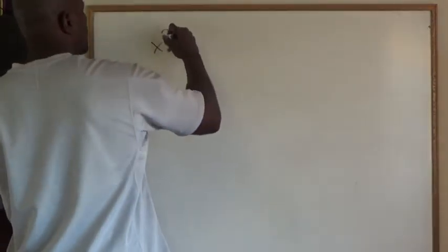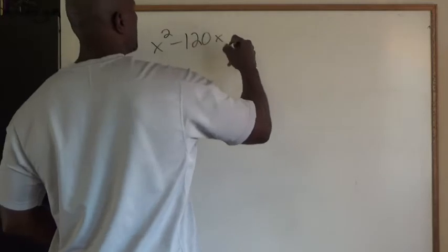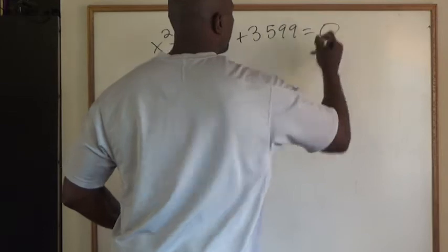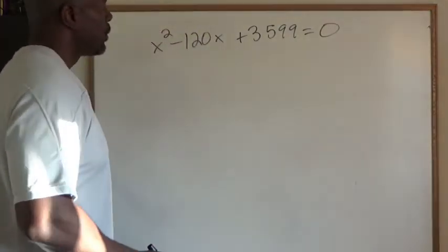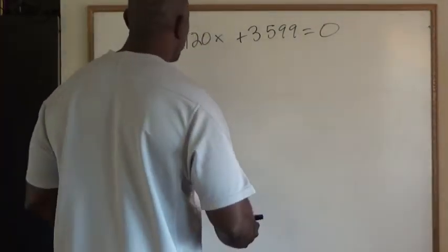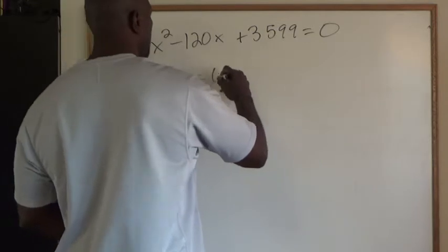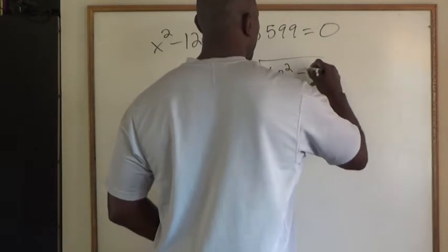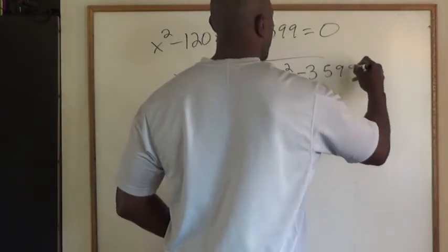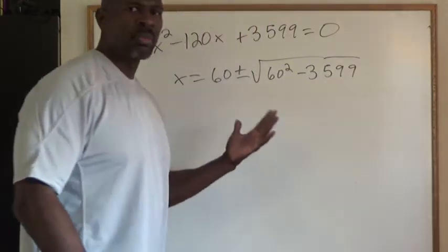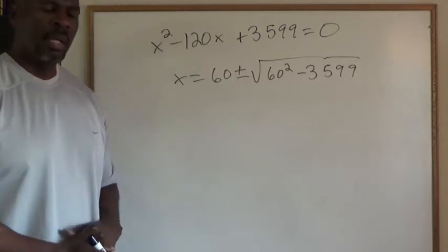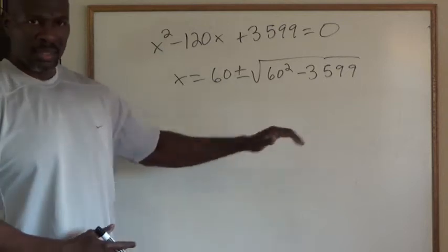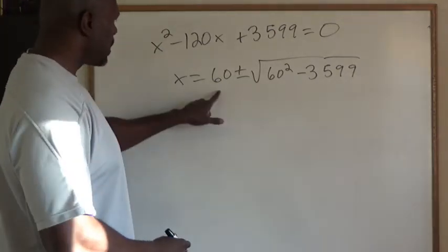So let's say we have X squared minus 120X plus 3599 equals 0. So we know if we were to solve this problem we would say X is 60 plus or minus the square root of 60 squared minus 3599. So that's what we would do to solve the problem. We would get 61 and 59 as our answer. But I want to leave it like this for analysis sake.